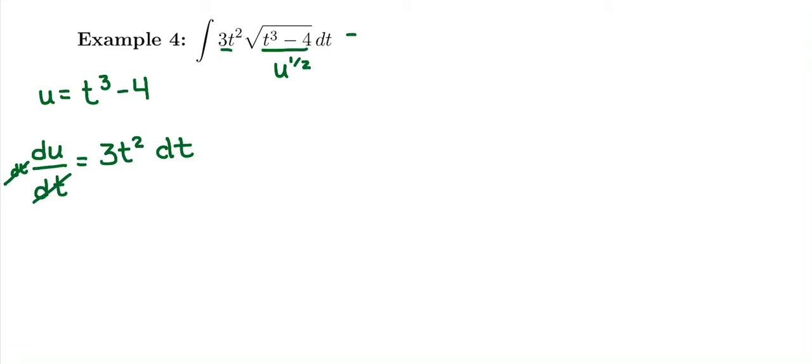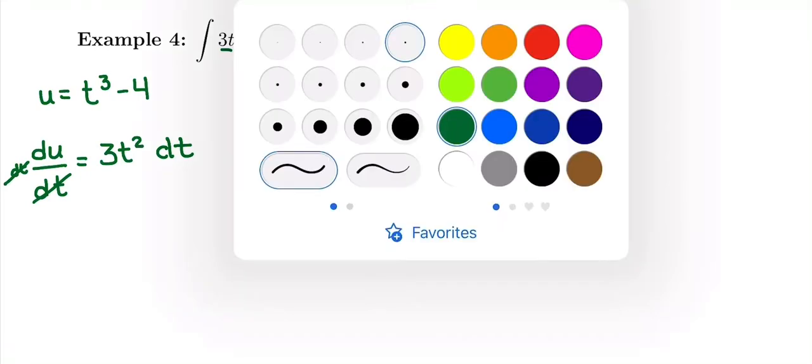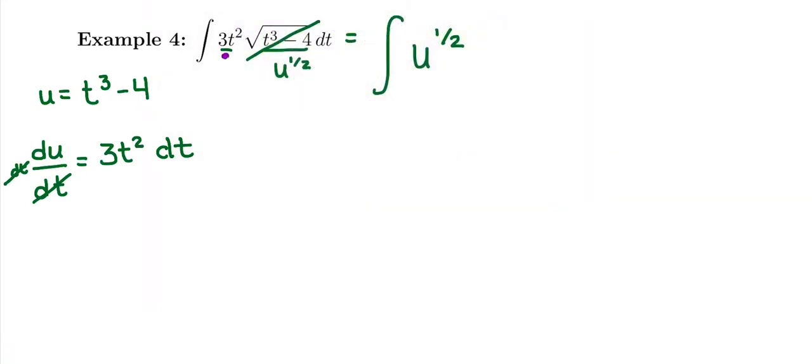So looking at this, we're going to do our substitution. We're really taking the antiderivative of u to the one-half. We just subbed in for everything under the square root. And then what we have left is a 3t squared dt, which is perfect because we need to have a 3t squared dt in order to be allowed to write our du in there. That way we can take the antiderivative.